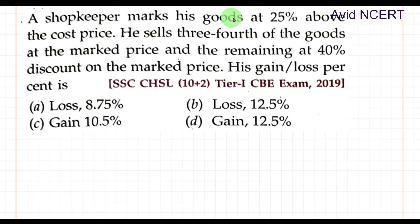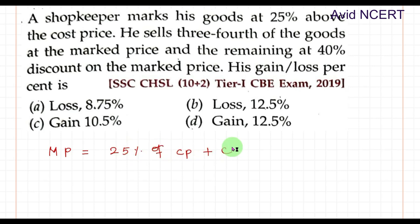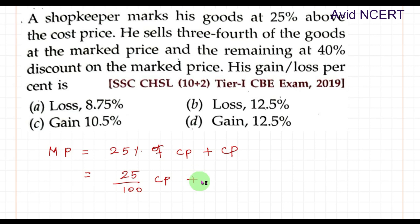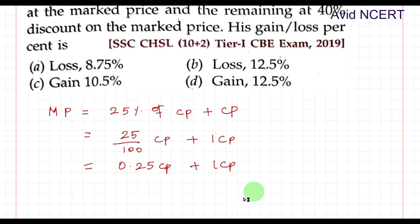From the first sentence, the shopkeeper marks his goods at 25% above the cost price, so the marked price (MP) equals 25% more than the cost price. That is: CP + 25% of CP = 25/100 × CP + 1 CP = 0.25 CP + 1 CP = 1.25 CP. Therefore, marked price equals 1.25 CP.